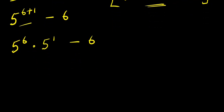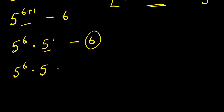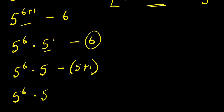What we can do again is I can simply express this 6 here as a summation of 5 and 1. So I have 5 to the power of 6 times 5 to the power of 1, which is seen as 5. This is minus 6, and I can write it as 5 plus 1 in brackets. So I have 5 to the power of 6 times 5, minus times 5 — this is minus 5 — then minus times positive 1, this is minus 1.